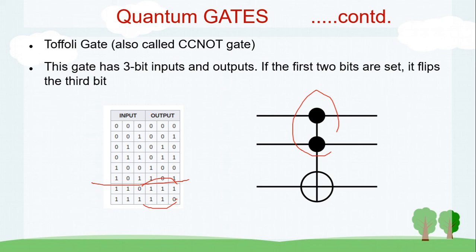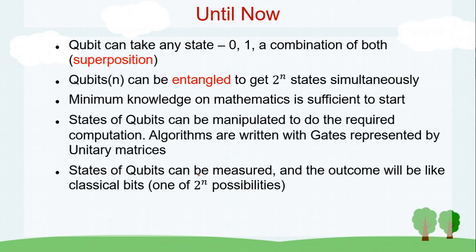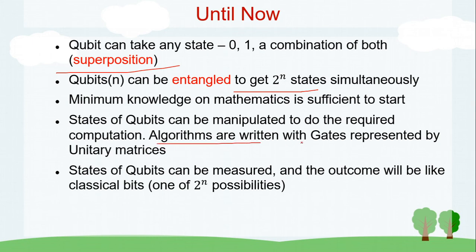With this we'll jump on to understanding an algorithm using what we've learned. To summarize: a qubit can take any state — zero, one, or a superposition of both; qubits can be entangled to represent 2^n states simultaneously; minimum mathematics is sufficient to start; states of qubits are manipulated to perform computation; algorithms are written using gates represented by unitary matrices; and qubit states can be measured, with outcomes behaving like classical bits. I hope to see you in the next video soon.